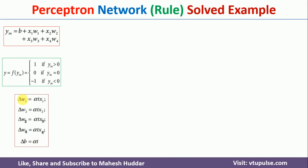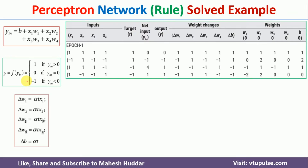We give one example at a time to the network. For the first input (1,1,1,1) with initial weights all zero, the net input y_in = 0. Using the activation function, since y_in = 0, the output is 0. The target is 1, and since output (0) and target (1) do not match, we need to update the weights.